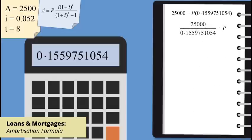Divide across by 0.1559751054 to obtain P. On the calculator, divide 25,000 by 0.1559751054. You can make use of the answer button to do this efficiently. The calculator shows 160281.9882.